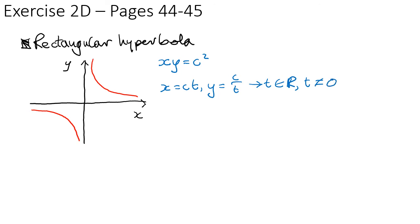If we pick a general point on the line—if we call this P—P can be (x, y) in Cartesian form. In parametric form, a general point would be (ct, c over t).